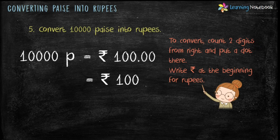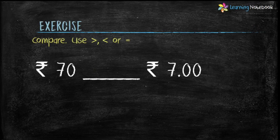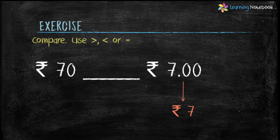Now let's do an exercise. Compare the following and use greater than, less than, or equal to. Rupees 7.00 is nothing but Rupees 7 and 0 paise, so we can write it as Rupees 7. And we know Rupees 70 is greater than Rupees 7.